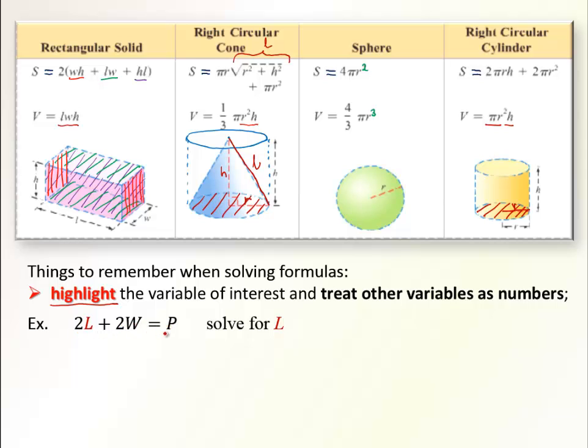2l plus 2w equals P. That comes from perimeter of a rectangle, with length l and width w. We are going to solve it for l. So let's highlight l, or write it in different color. And keep this in mind, focus your eyes on l, and try to undo all the other operations.